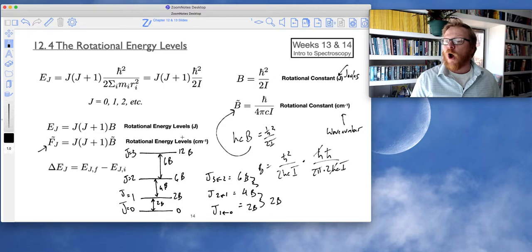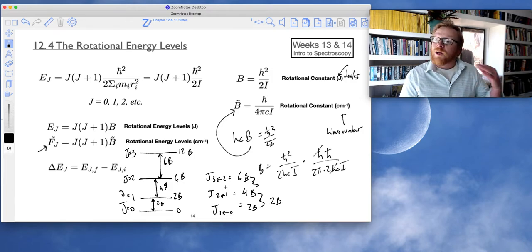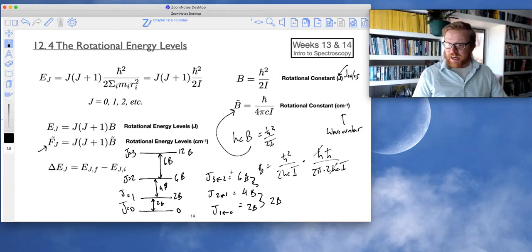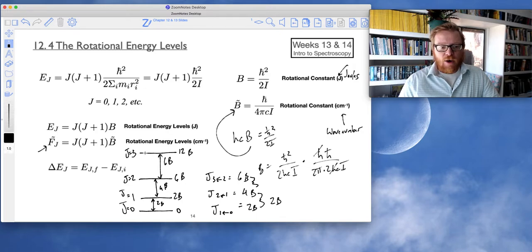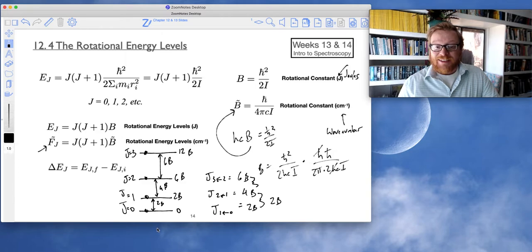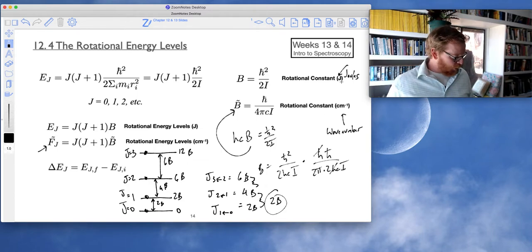So each level is growing by 2 times b. And because our molecules will have a population of rotational states. In other words, before we even excite this molecule with microwave energy, it's already going to have populations in level 3, level 2, level 1, level 0. And so what that means is we're going to see a spectrum with spacings every 2 times b. And I'll show you that here.